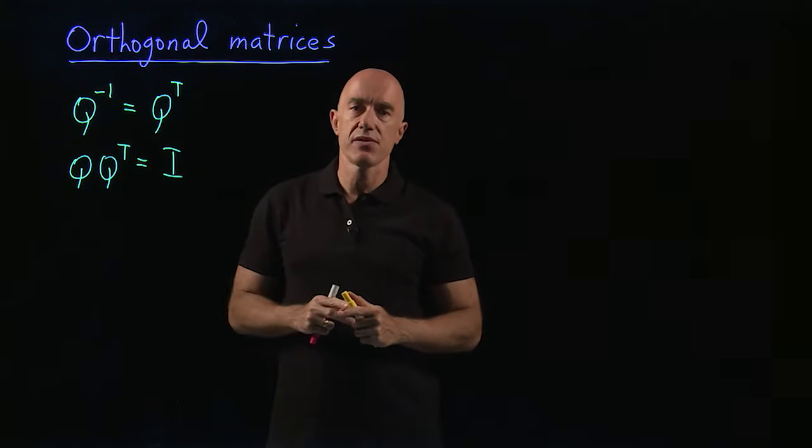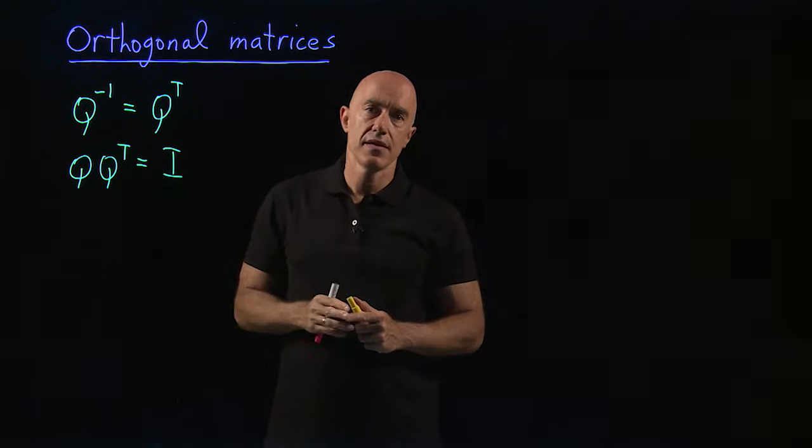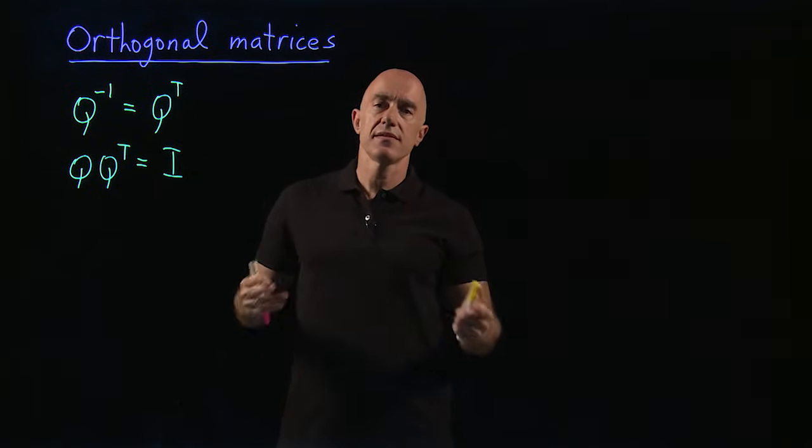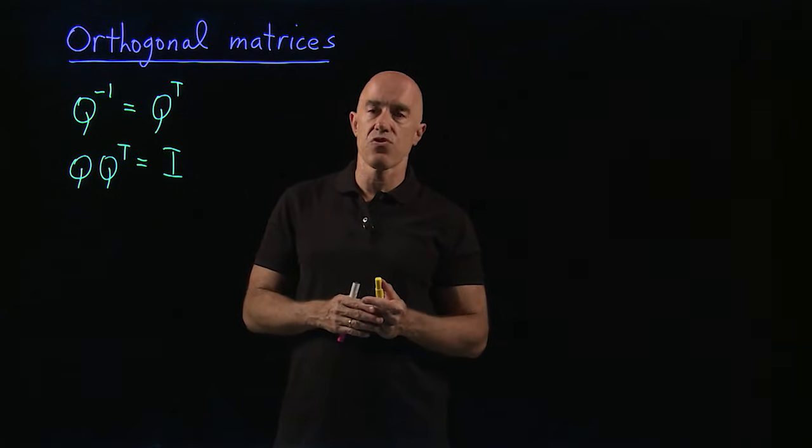That's equal to the identity matrix. So if the rows are the same, then you get 1. If the rows are different, then you get 0. That's the definition of orthonormality. Orthonormal vectors.